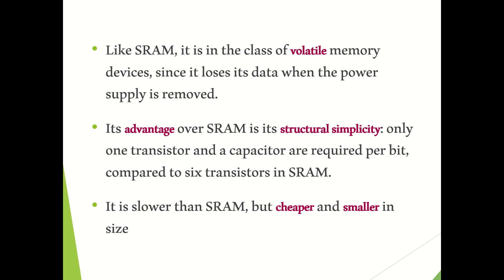Next, we want to study the advantages of dynamic RAM compared to static RAM. The first advantage is its structural simplicity — the structure of a dynamic cell is very simple. It contains only one transistor and one capacitor to store just one bit of information. But in the case of static RAM, nearly six transistors are used.